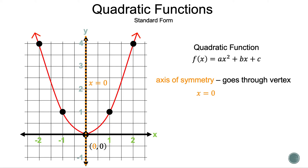One key bit of information is the axis of symmetry. The axis of symmetry goes through the vertex. In this case, the axis of symmetry is the line x is equal to 0. The great thing about the axis of symmetry is it cuts the graph in half, so we can pick any two points horizontally and count towards the axis of symmetry, and it will be the same, whether it's closer to the vertex or further away.